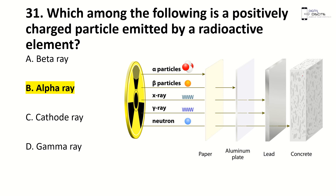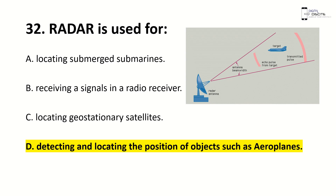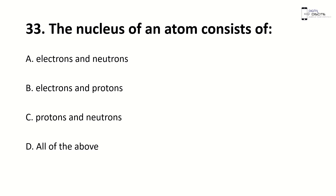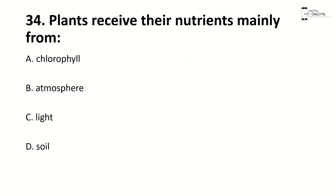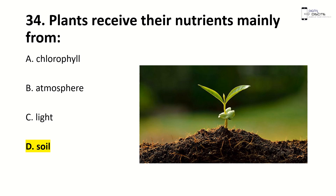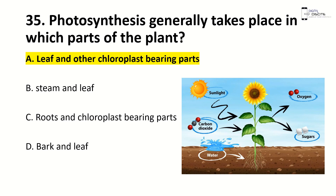Alpha rays are positively charged, beta rays are negatively charged, and gamma rays are neutral. Radar is used for detecting and locating the position of objects such as aeroplanes. The nucleus of an atom consists of — right answer is C, protons and neutrons in the nucleus, and electrons freely grouped in the orbits outside. Plants receive their nutrients mainly from — right answer is D, soil. Photosynthesis generally takes place in — right answer is A, leaves and other chloroplast-bearing parts of the plant.